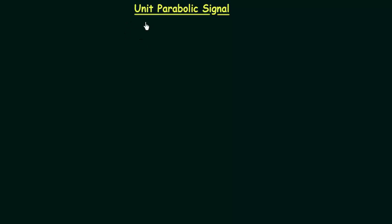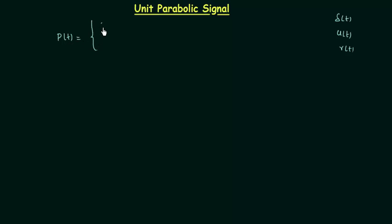In this lecture we will study the unit parabolic signal. We have already completed unit impulse signal, unit step signal, and unit ramp signal. The next signal is the unit parabolic signal. I will represent unit parabolic signal by P(t), and it is equal to 0 when time t is less than 0, and equal to t squared over 2 when time t is greater than or equal to 0.